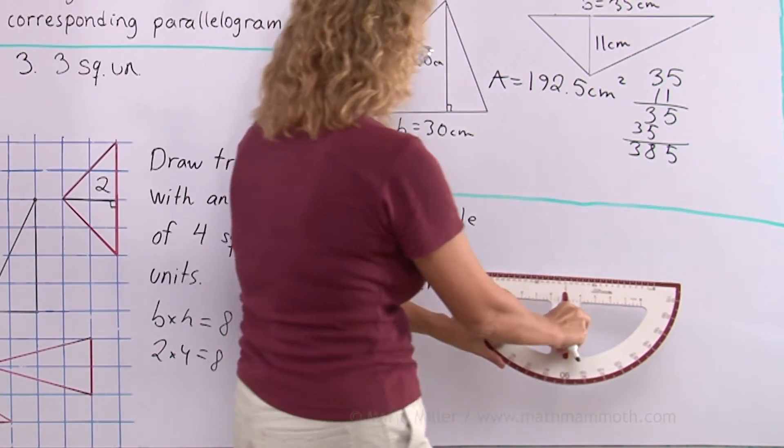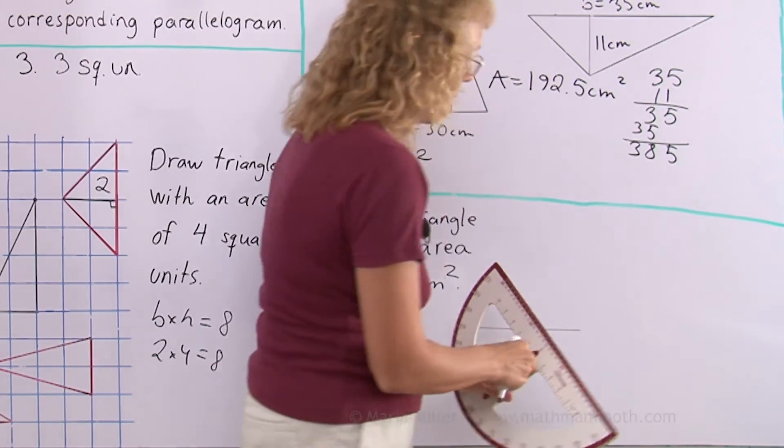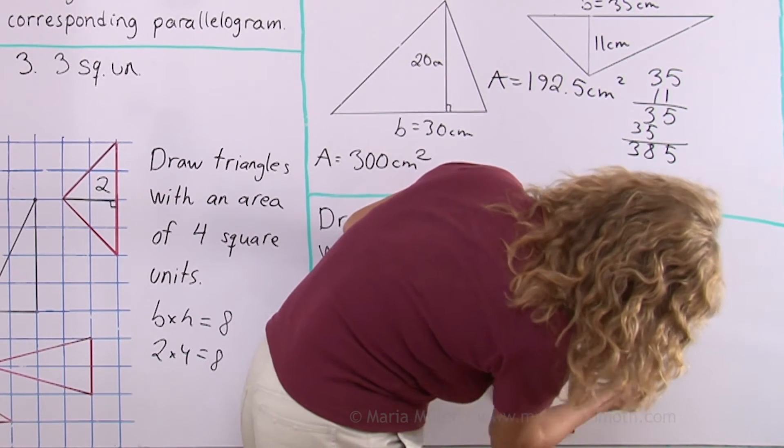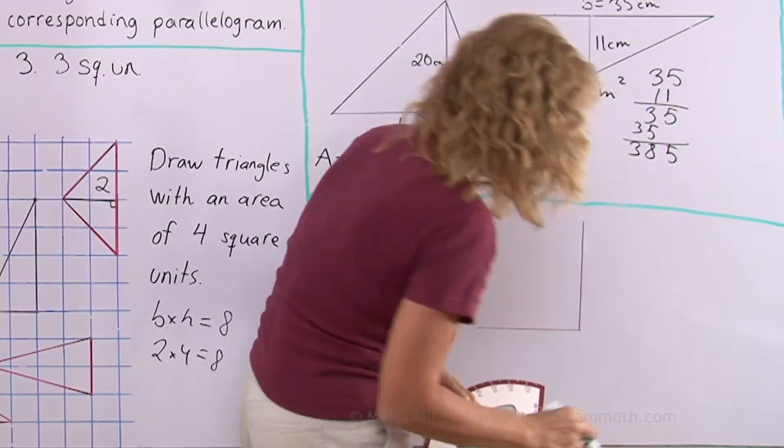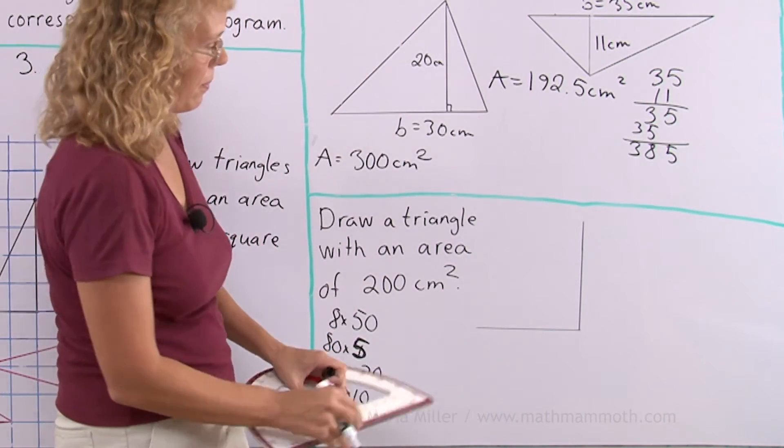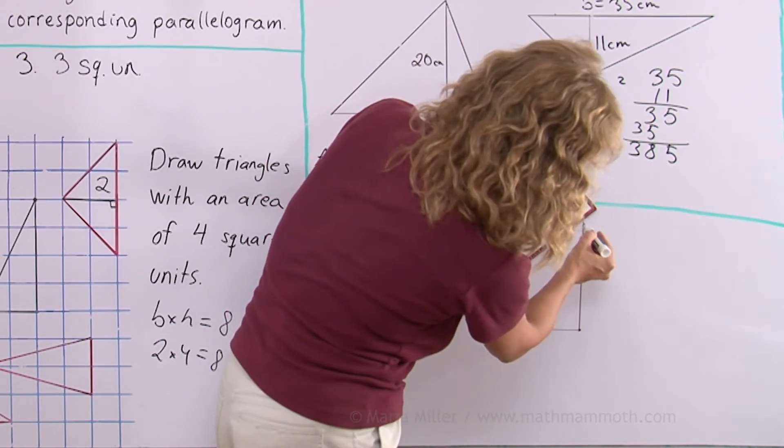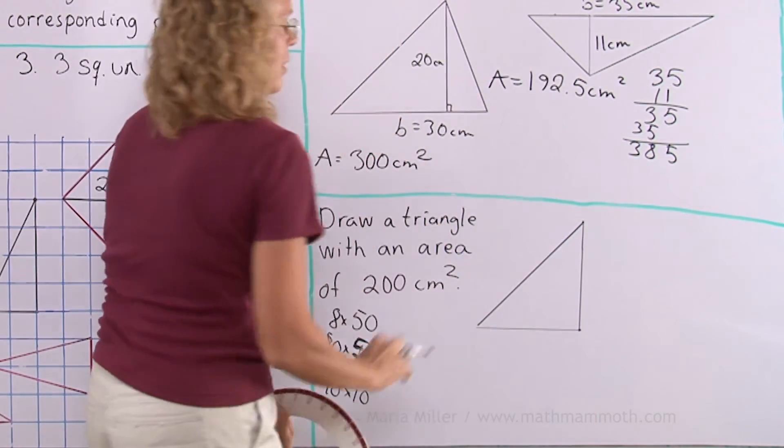First the base being 20 centimeters. Then I need a height of 20 centimeters. So I need to draw a perpendicular line here. Continue it until I have my 20 centimeters. Okay. And this will be now a right triangle. There. There. That's 20 and 20 centimeters.